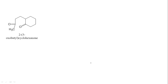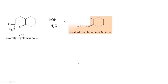Let us take another reactant. On reaction with KOH, using a similar mechanism as above — you try this — on removing minus H2O, the product is hexahydronaphthalene-2(1H)-one. That is the final product. Try this reaction with the above mechanism.